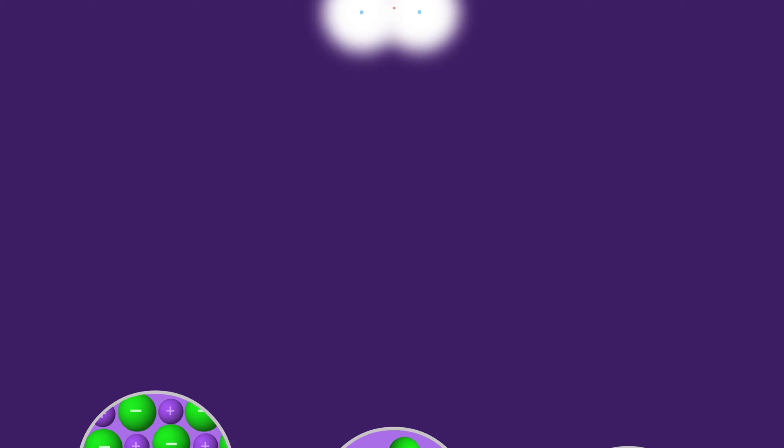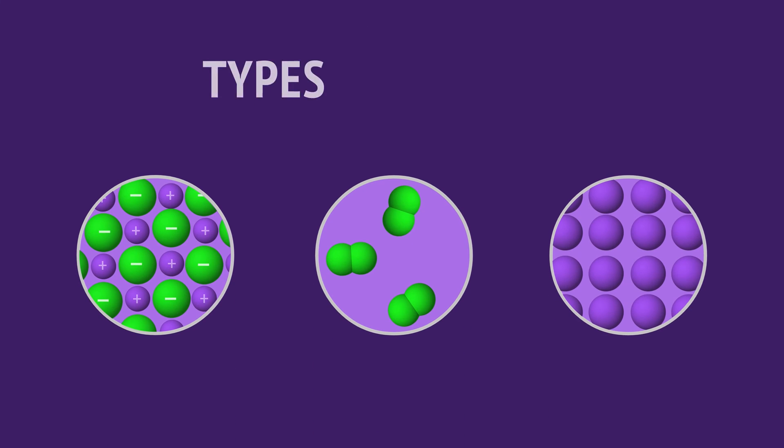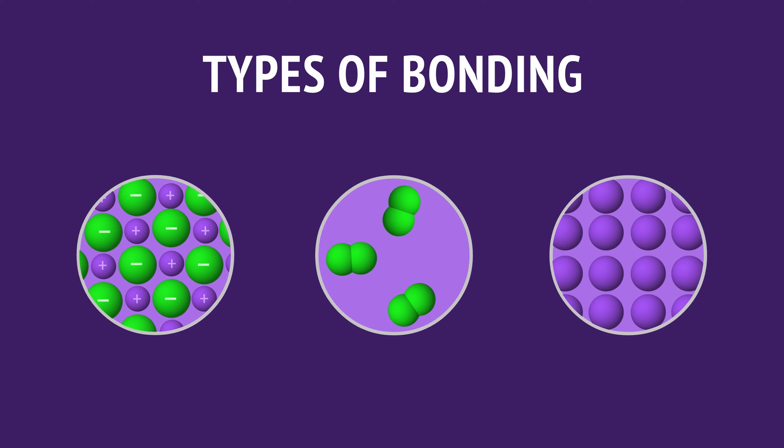Chemical bonds are the forces of attraction that tie atoms together. There are three primary types of chemical bonds – ionic, covalent, and metallic.